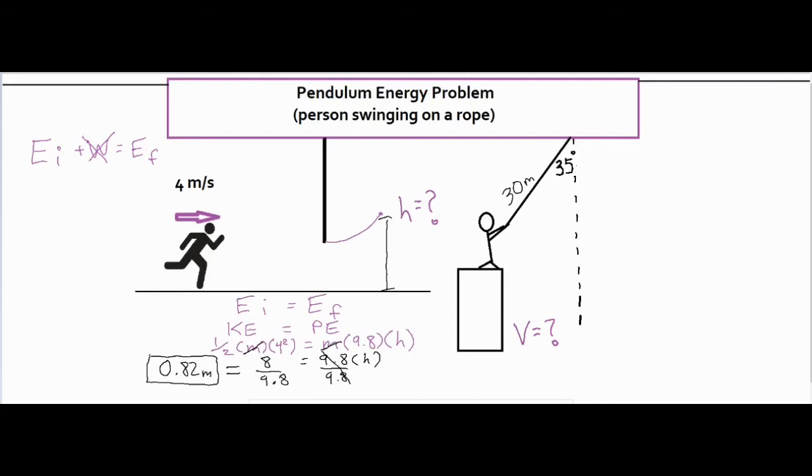So you really have to think about the problem conceptually first. So the person is currently at this height right here. Eventually, when they swing down, they're going to go down to a lower height. And at that point, the rope is going to be hanging vertically 30 meters.